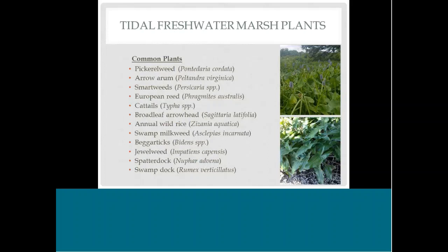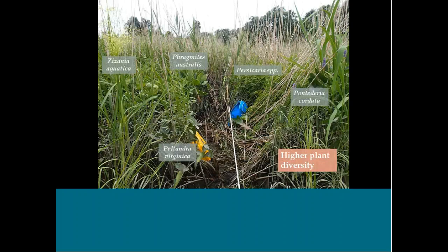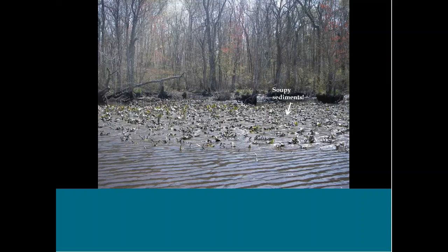Common plants in tidal freshwater marshes in Delaware include pickerelweed, arrow arum, various smartweeds, and cattails — but that's not an all-inclusive list. There's a lot of plant diversity, as illustrated by a field site photo where you can see five or six different plant species in a single shot, in contrast to a low marsh area with just one plant species. Another photo shows how soupy the sediments can be — it would be very challenging to walk in there.